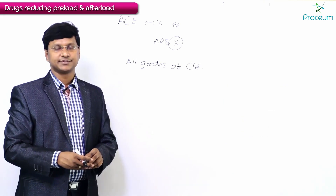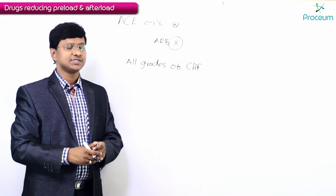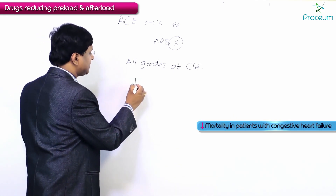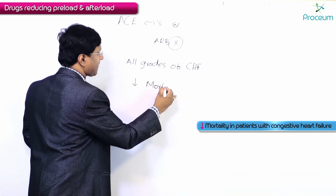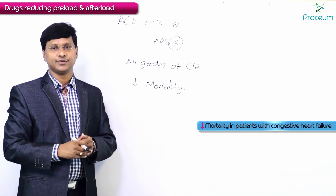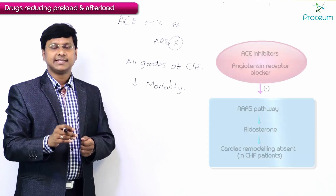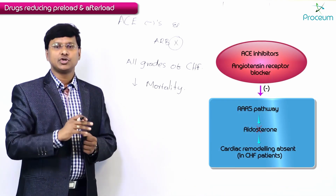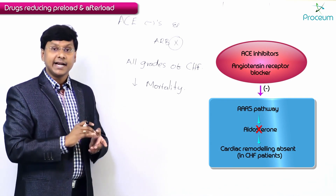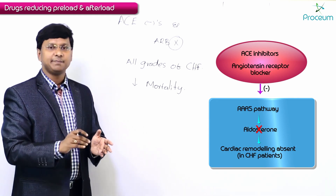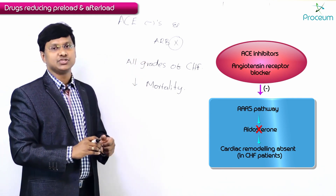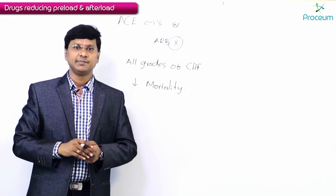These drugs decrease mortality in patients with congestive heart failure. They do so by inhibiting the RAS pathway, so aldosterone is not formed. Because aldosterone is not formed, cardiac remodeling will not occur in patients with congestive heart failure when you prescribe ACE inhibitors or angiotensin receptor blockers.